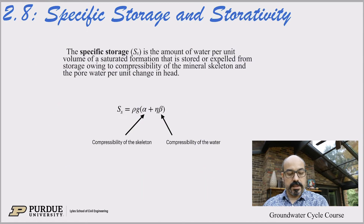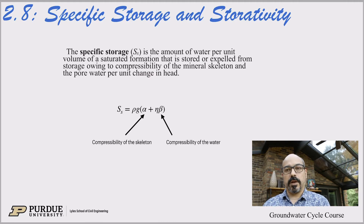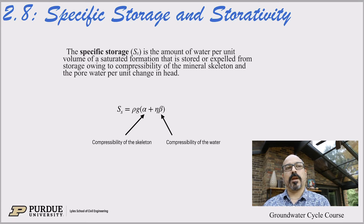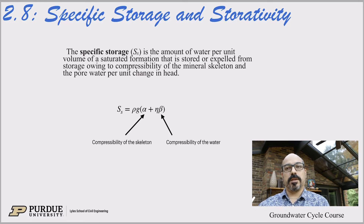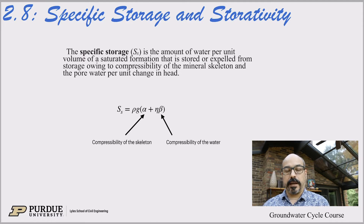We've talked about specific yield and specific retention last time. Specific yield is basically the water that readily flows by gravity out of the soil, out of the sponge. The implied assumption is that we're talking about a non-confined aquifer — a phreatic aquifer, a water table aquifer. For a confined aquifer, obviously there's no gravity because it's between confining layers, so water is trapped in there and can't really flow out by gravity.